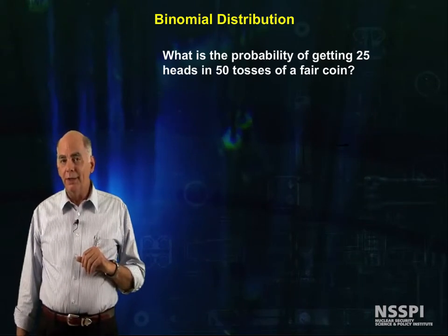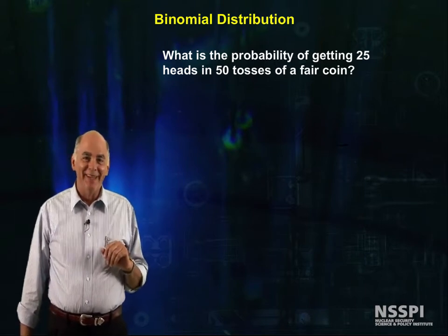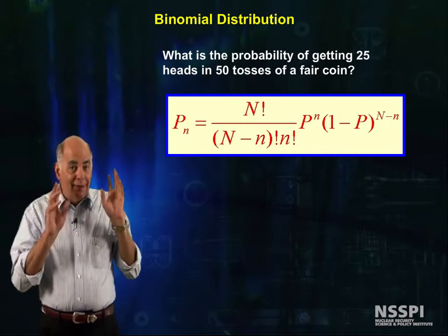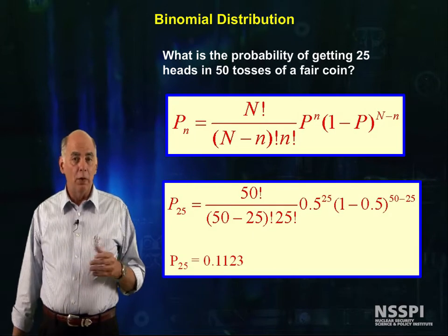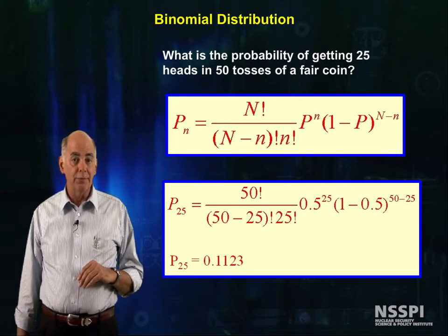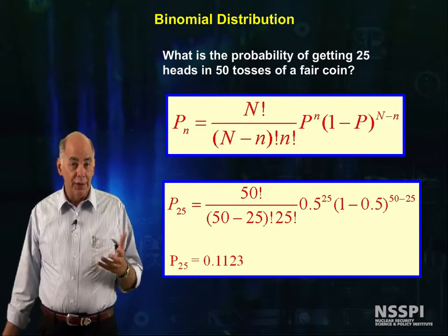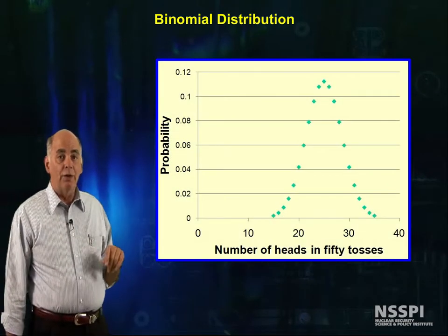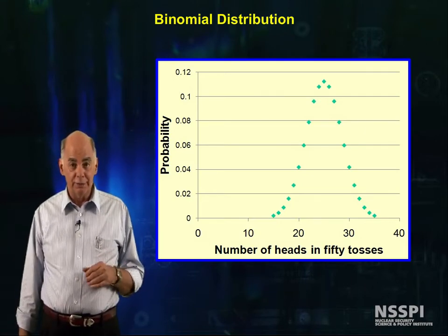Let's use this to work a problem: what is the probability of getting 25 heads in 50 tosses of a fair coin? We asked that earlier. I can now plug numbers into the formula, and by courtesy of Excel, I get that P sub 25 is equal to 0.1123, or about 11.23 percent of the time. That doesn't sound very big for being the average or expected value. Here is a graph of the probability of getting a particular number of heads in 50 tosses of a fair coin.